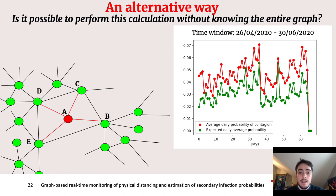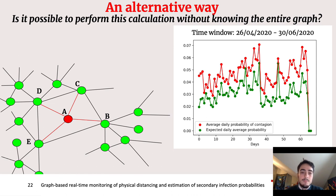In red, on the right plot, we have the probability estimated by considering the entire mathematical object. In green, the probability calculated only starting from average properties — that are the mean degree and standard deviation.